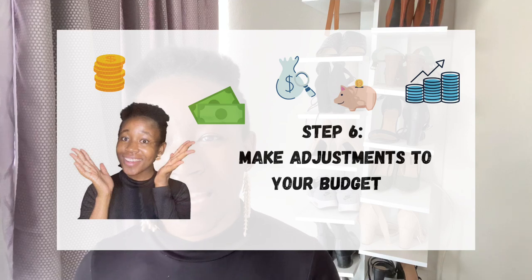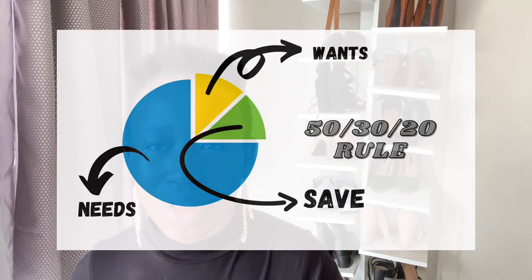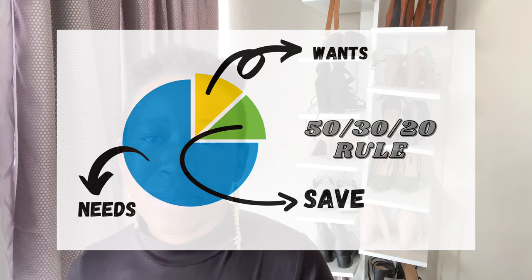Step number six is making adjustments to your budget. I use two approaches and I'll share those with you. The first is the budgeting philosophy called the 50/30/20 rule, which says that 50% of your income should be allocated to your needs, 30% to your wants, and 20% to your savings. I don't use it exactly as stated, but this concept helps you know how to distribute your income towards your expenses, and helps you see if you are spending more on your wants or on your needs so that you can distribute it in a way that suits you. Remember, this is called personal budgeting for a reason — you just have to make sure that it works for you.